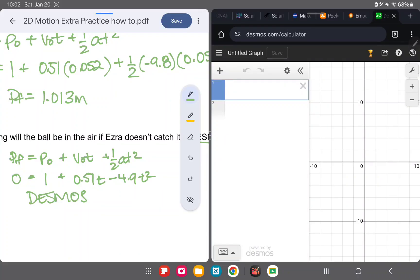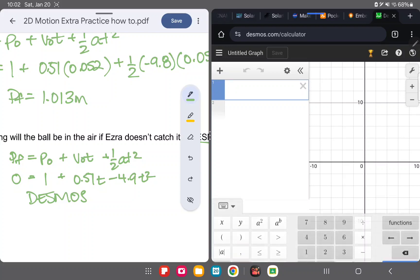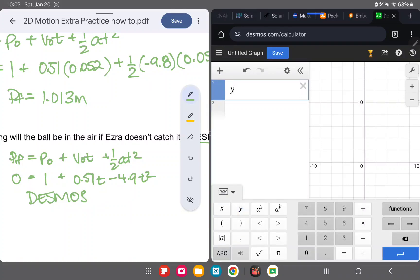So let's go and use Desmos. I did a cool thing and made a half screen. Super cool. All right. So our equation is Y equals one plus 0.51 time minus 4.9 times squared. All right. Let's look at that up close.